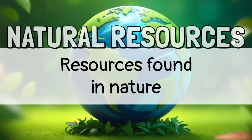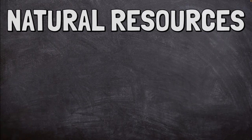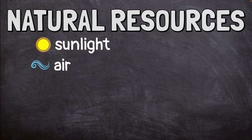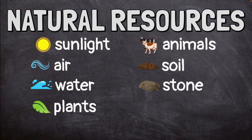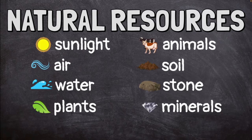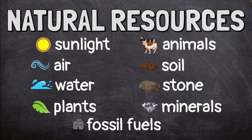Natural resources are resources found in nature. They are not made by humans. Examples include sunlight, air, water, plants, animals, soil, stone, minerals, and fossil fuels. We use these to take care of our basic needs and survive.